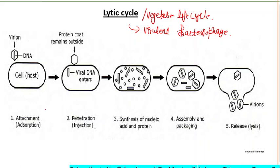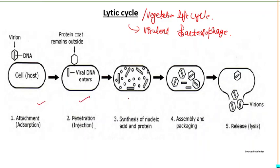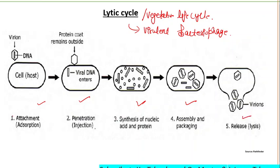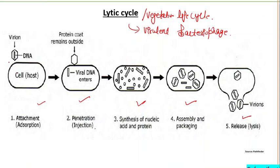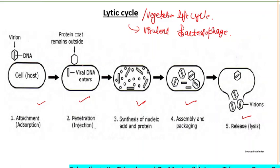The lytic cycle consists of five main steps: attachment, penetration, synthesis of nucleic acid and proteins, assembly and packaging, and release. The cycle begins with attachment of the bacteriophage to receptors on the bacterial cell wall. After attachment, penetration of genetic material occurs.